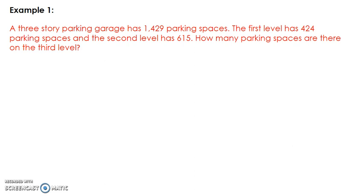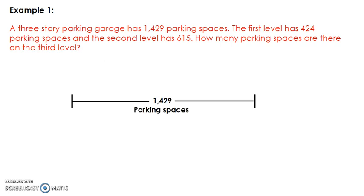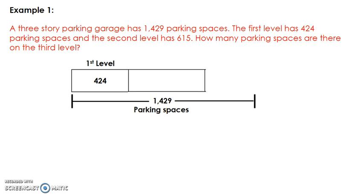To begin, I know there are a total of 1,429 parking spaces, so my whole will represent 1,429 parking spaces. The first level has 424 parking spaces, so my first box will represent the first level with 424 parking spaces. The second level has 615 parking spaces, so my next box will represent the parking spaces on the second level of the parking garage with 615 parking spaces.